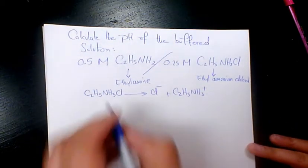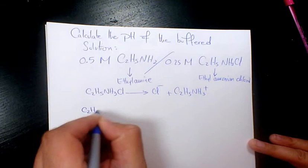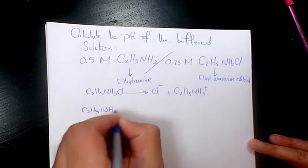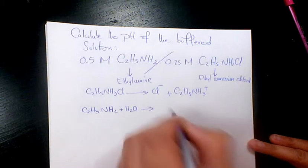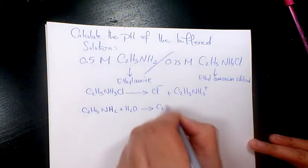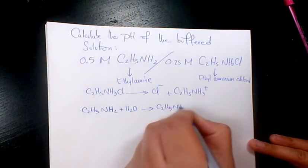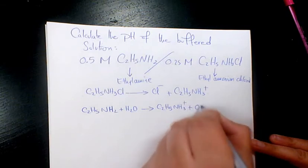So when we have it we have C2H5NH2 plus water that's gonna give me C2H5NH3 plus plus OH minus.